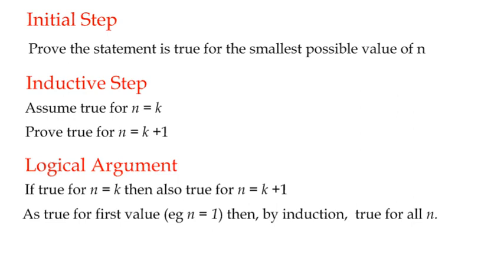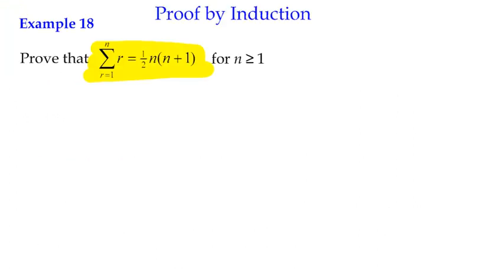Let's just do that first of all, and we'll come back to this. So the initial step is to build the first domino. Let's check it's true for the smallest possible value. So we're going to write down initial step. Prove true for n equals 1. We're told that n can be greater or equal to 1, so the smallest value is going to be n equals 1.